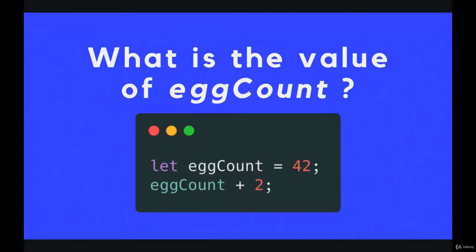Okay, so let's start with the first one. What is the value of eggCount? Well, it's initialized to 42. And then on the second line, we are referencing eggCount and adding 2 to the value. But that doesn't change eggCount. We're not resetting or updating eggCount in any way. We're just asking for 42 and adding 2 to it, and then that's it. We're not saving it anywhere to eggCount. So eggCount is still 42 at the end of this.